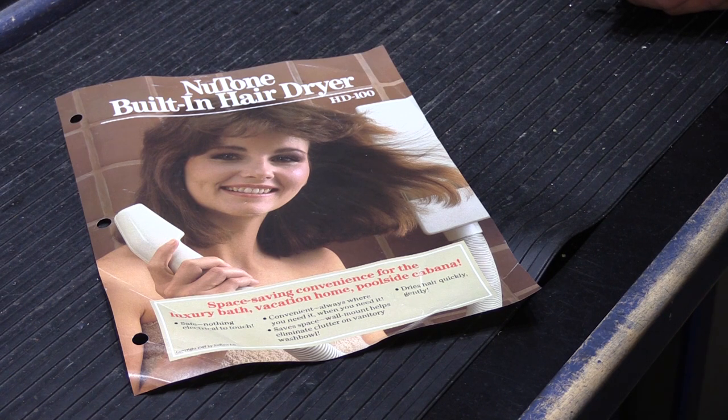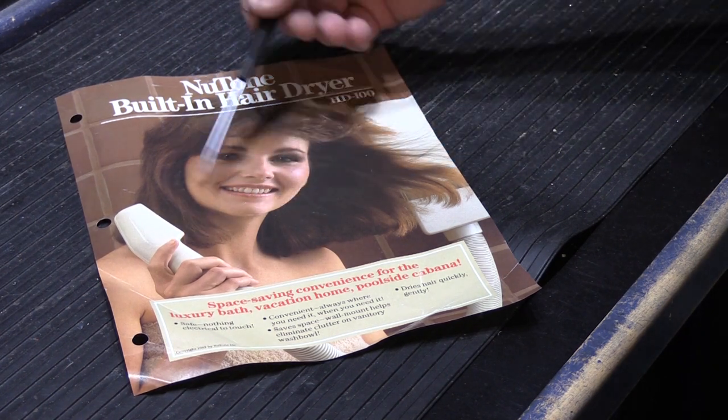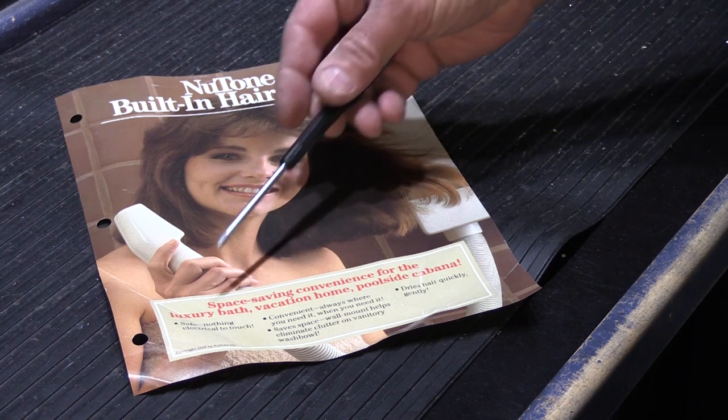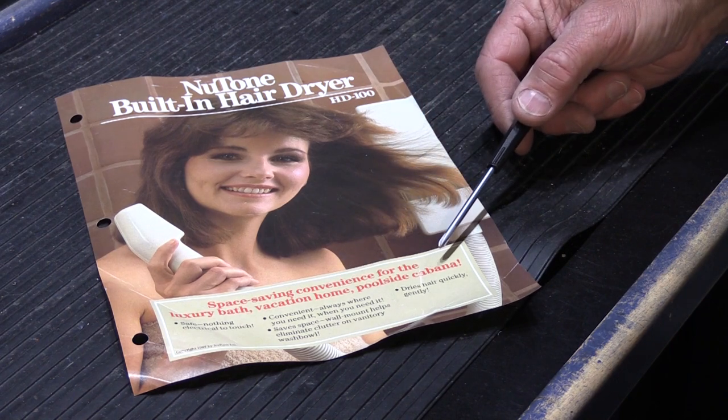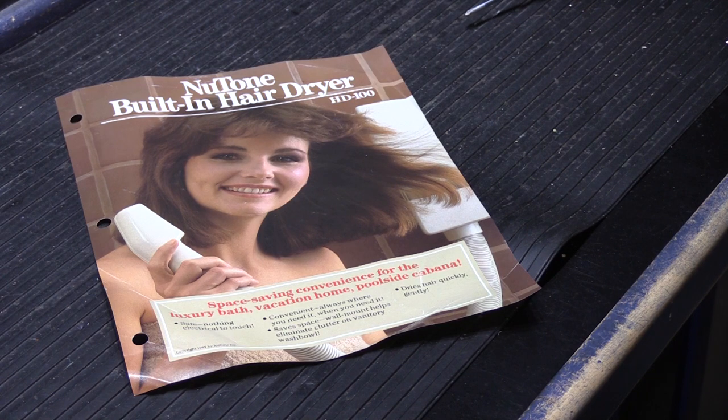The idea was it was a wall-mounted electric hair blow dryer that you could just pick up the wand and dry your hair, just like this very attractive gal is doing here. The idea behind it was space-saving convenience for the luxury bath, vacation home, or poolside cabana. Because you know, if you have a poolside cabana, you can't have one of those blow dryers in the drawer. That's just not going to swing it. What are the neighbors going to say?